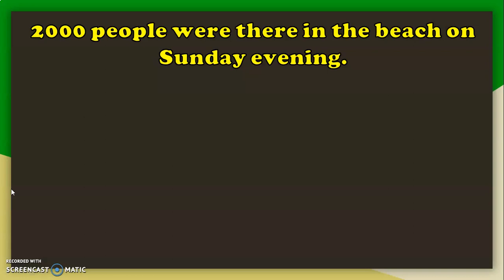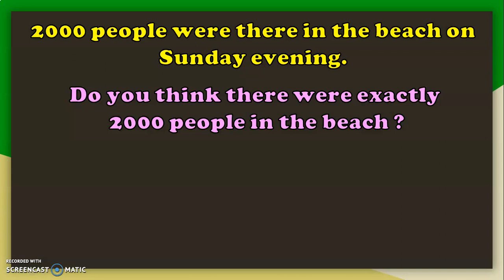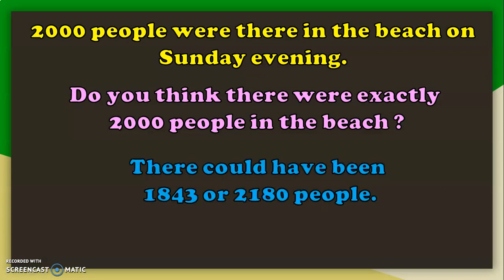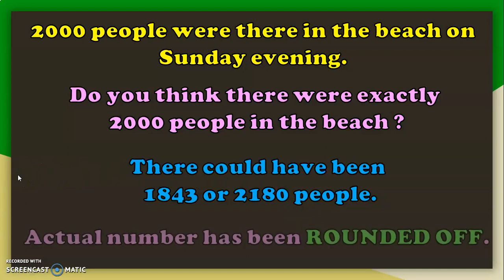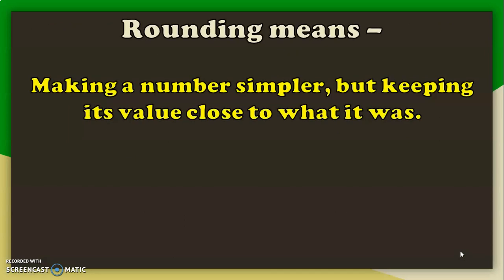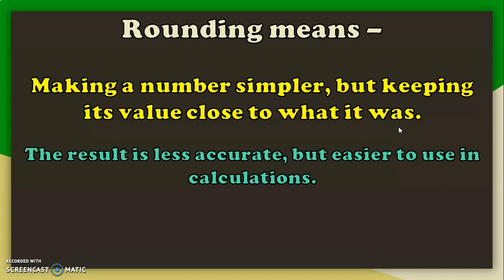Before knowing what it means to round off numbers, let us see this statement: 2000 people were there in the beach on Sunday evening. Do you think there were exactly 2000 people in the beach? There could have been 1843 or 2180 people, or any number closer to 2000. The actual number has been rounded off. Rounding means making a number simpler but keeping its value close to what it was. We do that to make calculations easier, though the result is a little less accurate.